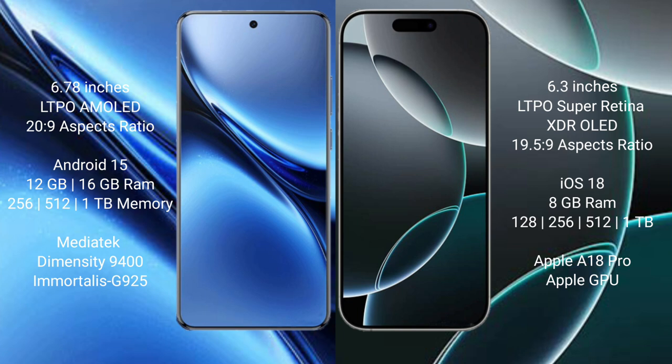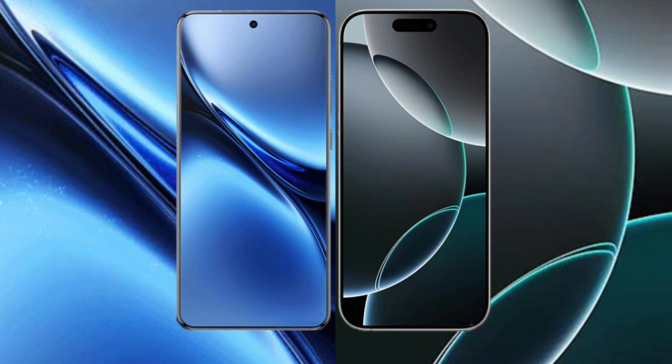Vivo X200 Pro runs on the Android 15 operating system; iPhone 16 Pro runs on iOS 18. Vivo X200 Pro comes with 16GB RAM and 256GB, 512GB, or 1TB internal storage, powered by the MediaTek Dimensity 9400 processor with GPU G925. iPhone 16 Pro comes with 8GB RAM and 128GB, 256GB, 512GB, or 1TB internal storage, with Apple A18 Pro processor and Apple GPU.